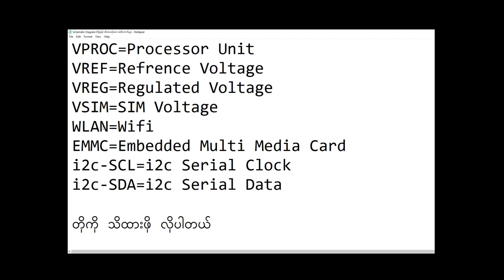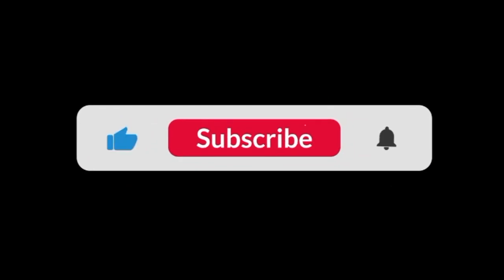This is the same footage as VLAN, Wi-Fi. EMMC is embedded media card. I2C SCL is I2C clock, I2C SDA is I2C data. Thank you for watching.